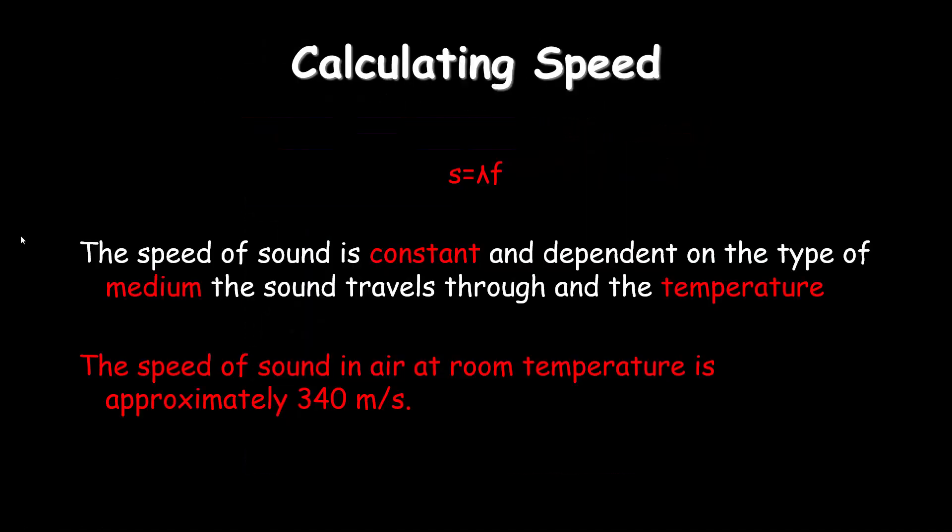You are all familiar with this formula already, except I presented it in a different format as wavelength equals speed divided by frequency. That is the exact same formula as speed equals wavelength times frequency. Remember, lambda is wavelength. The speed of sound is a constant and is dependent on the type of medium. If it's in air, it's 340 meters per second. If it's water, speed of sound gets higher. If it's in the upper atmosphere or close to space, speed of sound gets slower.